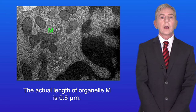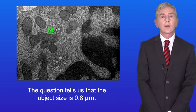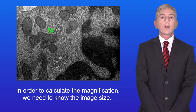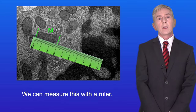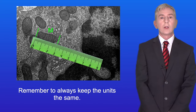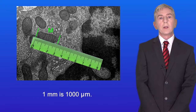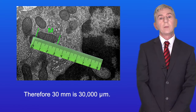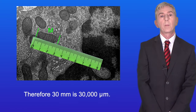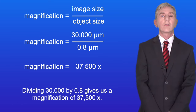The actual length of organelle M is 0.8 micrometers — this is our object size. To calculate the magnification, we need the image size, which we measure with a ruler: the length of organelle M is 30 millimeters. We convert 30 millimeters to micrometers: since 1 millimeter equals 1,000 micrometers, 30 millimeters is 30,000 micrometers. Dividing 30,000 by 0.8 gives us a magnification of 37,500 times.